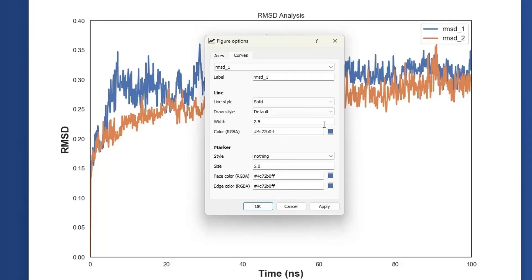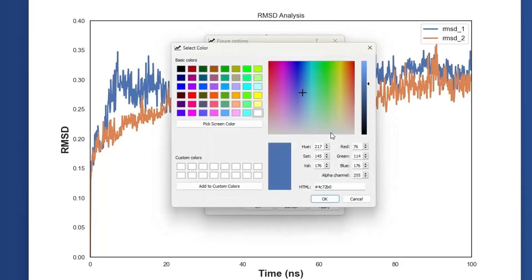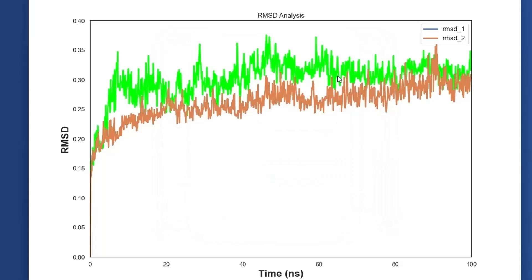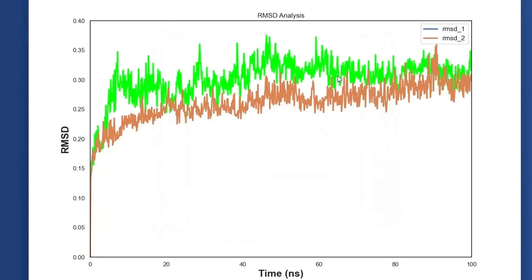You also have the curve button, which helps you do a lot of customization with your curves. For example, if you are not happy with the blue color of RMSD_1 and want to change it, click on the color dot and from the menu, pick any color of your choice. Currently we want to give it a light green color, so we select light green and hit OK. After clicking apply, the RMSD_1 curve is now colored green on the graph.